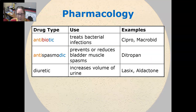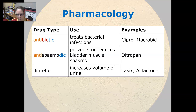An antibiotic treats bacterial infections, such as Cipro or Macrobid. An antispasmodic prevents or reduces bladder and muscle spasms, like Ditropan. And a diuretic increases the volume of urine, usually to lessen the fluid load in the body, such as Lasix and Aldactone.